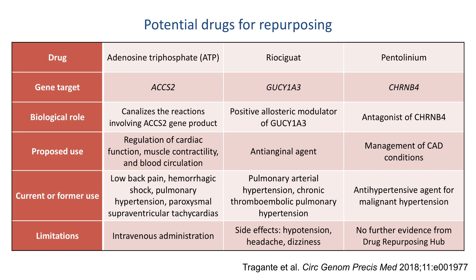Ryociguat is a positive allosteric modulator of the GUCY1A3 gene product. Its original indications were for pulmonary arterial hypertension and chronic thromboembolic pulmonary hypertension treatment, but it might potentially serve as an antianginal agent. Pentolinium, an antagonist of the CHRNB4 gene product, has been used for the treatment of malignant hypertension, but might also be useful in the management of CAD.